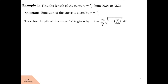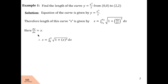Here x1 will be the x-coordinate of the first point and x2 will be the x-coordinate of the second point. Now we calculate dy/dx from the equation y = x²/2. Therefore, dy/dx is 2x/2, that is just x. Then s will be the integral from 0 to 2 of under root 1 plus x² dx.